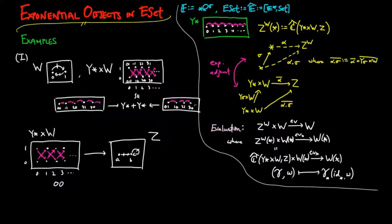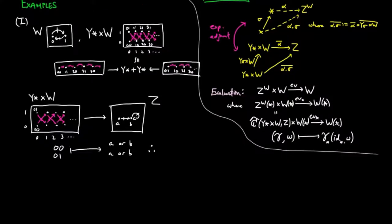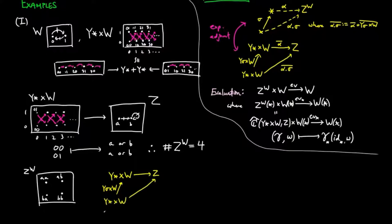Then since morphisms for the product of the representable in W are determined by where (0,1) and (0,0) are mapped to, we see that there are four choices for such a morphism, or that Z to the W has four figures. The process between figures can be computed by the observation we discussed before on the right. The right-action morphism, which is the product of Y-sigma and the identity on W, takes (0,0) and (0,1) to (1,0) and (1,1), since sigma is only applied to the first component of this product.